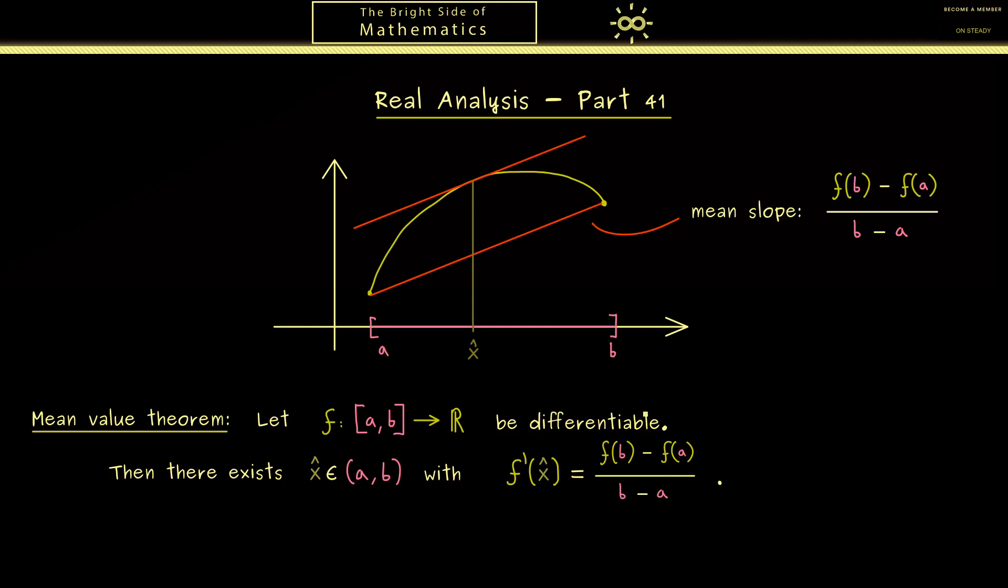You can simply say the secant slope is given by some tangent slope in the middle. However please note here the statement of the theorem is the existence not the uniqueness. So it's definitely possible that you could have many x hats with this property. For example for constant function f you immediately see this.